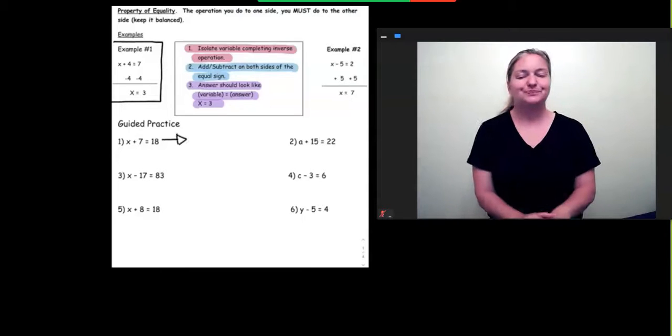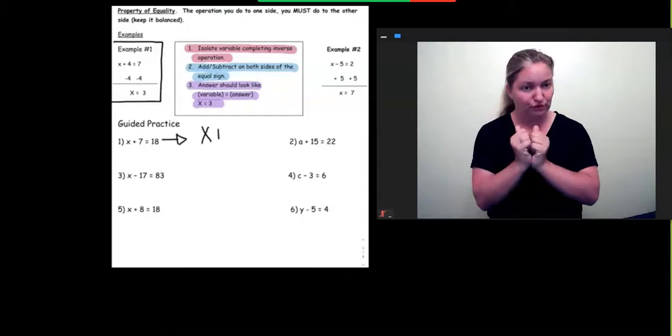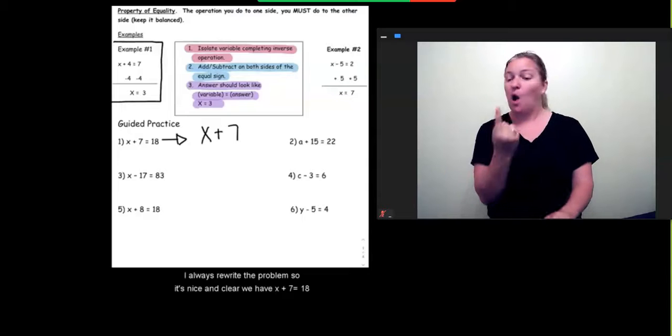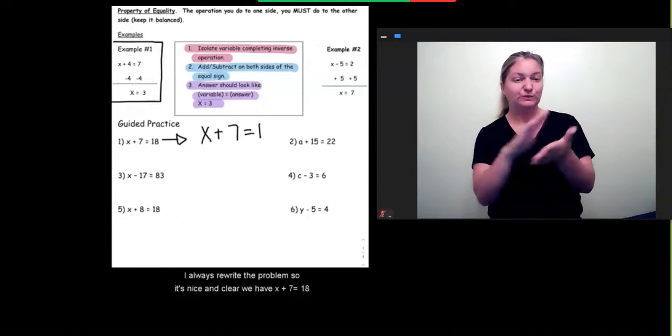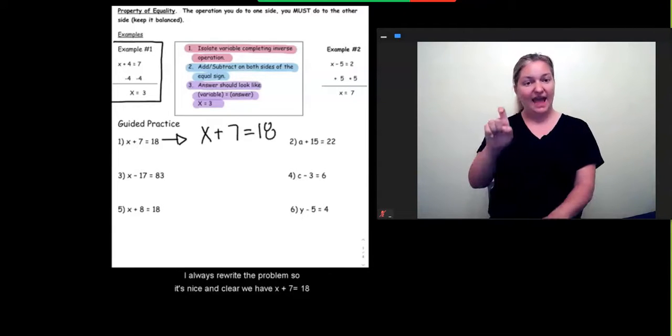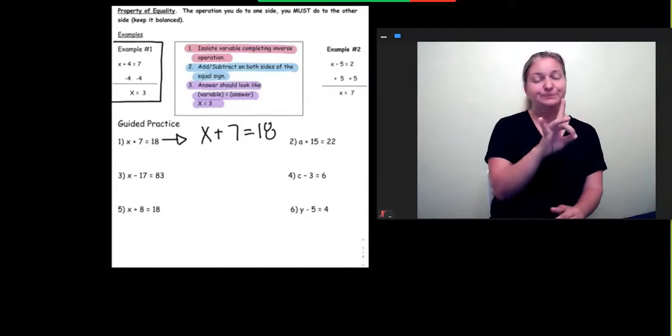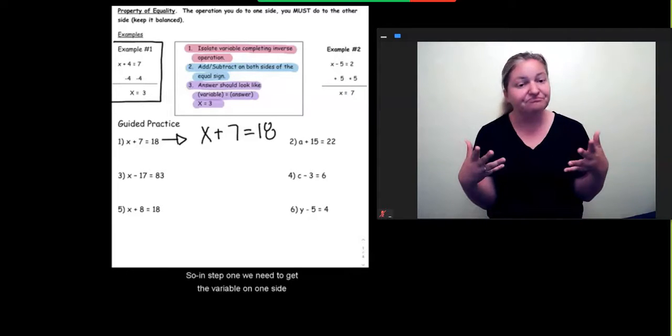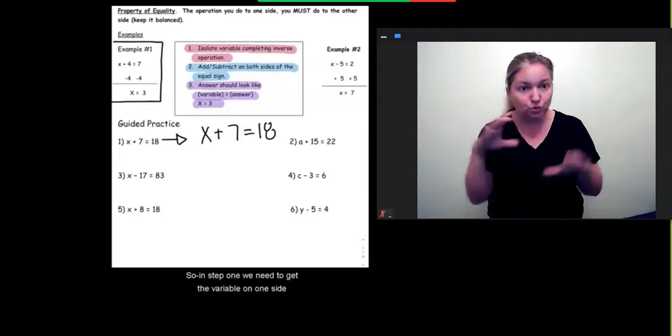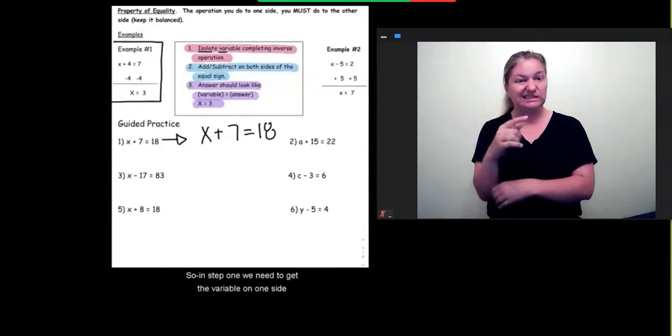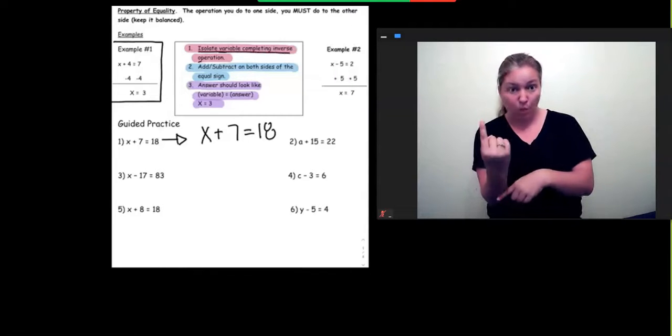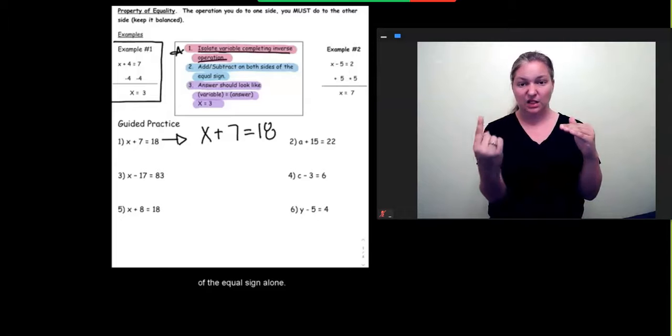So, let's do number one together. I always rewrite the problem so it's nice and clear. We have x plus 7 equals 18. So, in step one, we need to get the variable on the side of the equal sign alone.